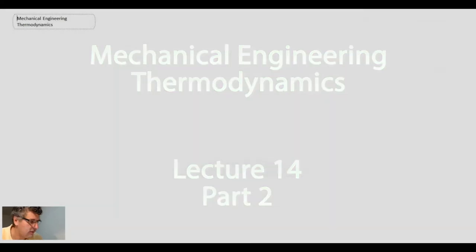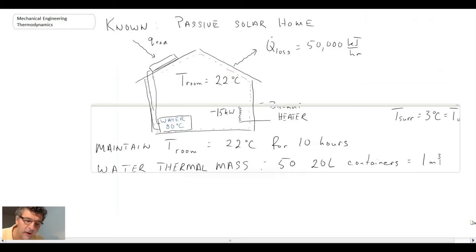This is part two of the passive solar house problem. If you recall the problem statement we looked at earlier, we're dealing with a house that we're trying to maintain at 22 degrees Celsius throughout the evening.